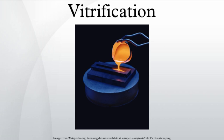Bulk vitrification uses electrodes to melt soil and wastes where they lay buried. The hardened waste may then be disinterred with less danger of widespread contamination. According to the Pacific Northwest National Labs, vitrification locks dangerous materials into a stable glass form that will last for thousands of years.